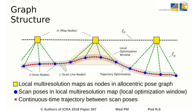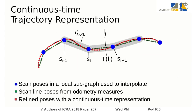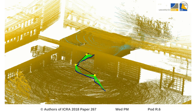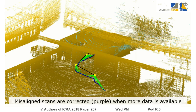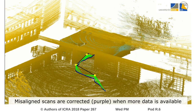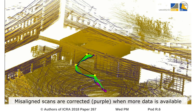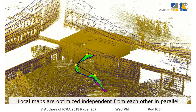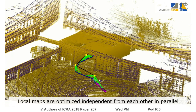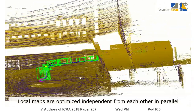By modeling individual 3D scans of a local map as a subgraph, we build a hierarchical graph structure, enabling refinement of the map in case of misaligned measurements when more information is available. In each subgraph, a continuous time representation of the sensor trajectory allows to correct measurements between scan poses. Subgraphs are independent from each other, allowing to minimize errors independent from other parts of the graph.